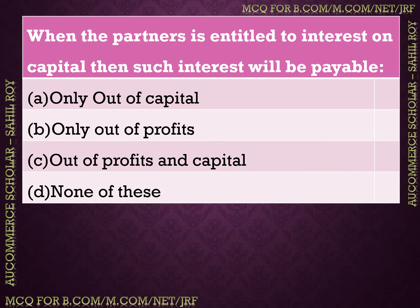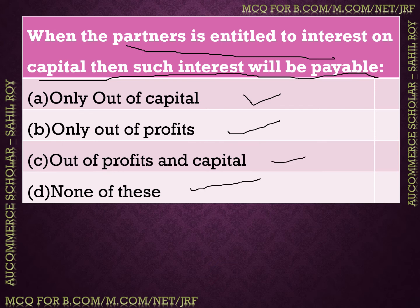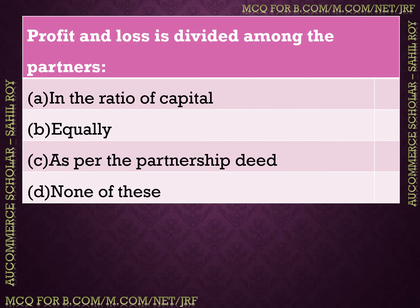When a partner is entitled to interest on capital, such interest will be payable from — options: (A) only out of capital, (B) only out of profits, (C) out of profits and capital, (D) none of these. The correct answer is Option B — only out of profits. Regarding profit and loss division, it is divided as per the partnership deed — Option C is correct.